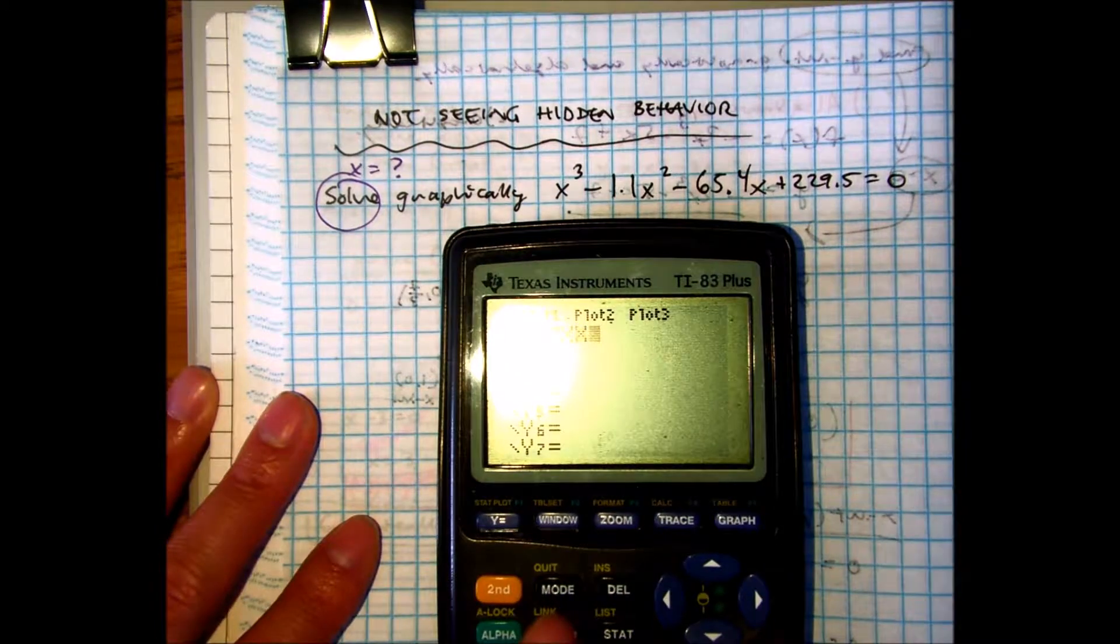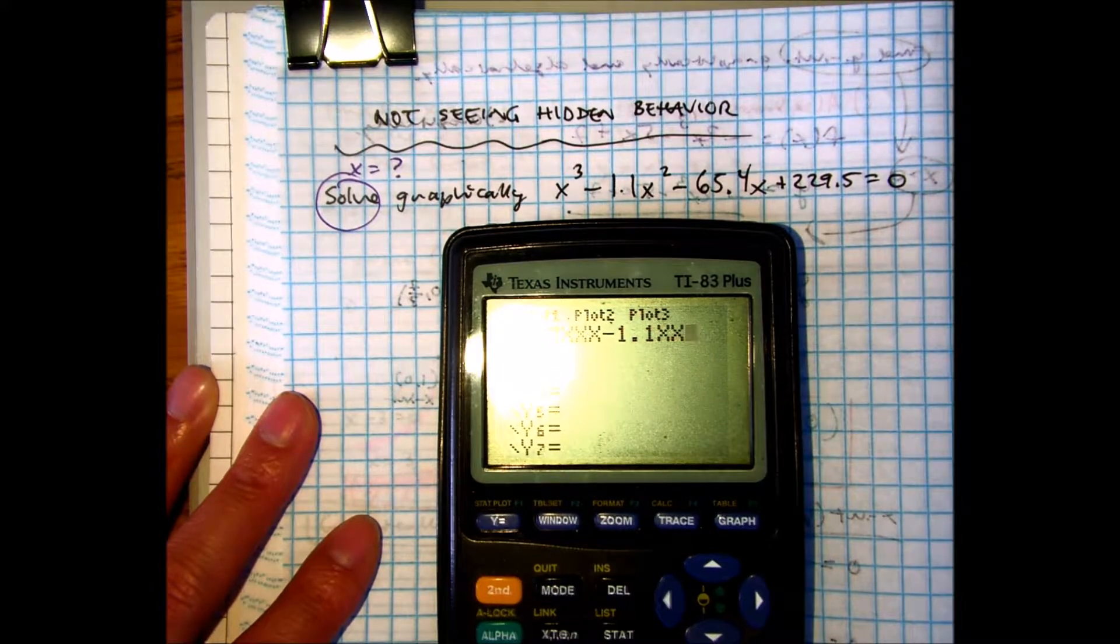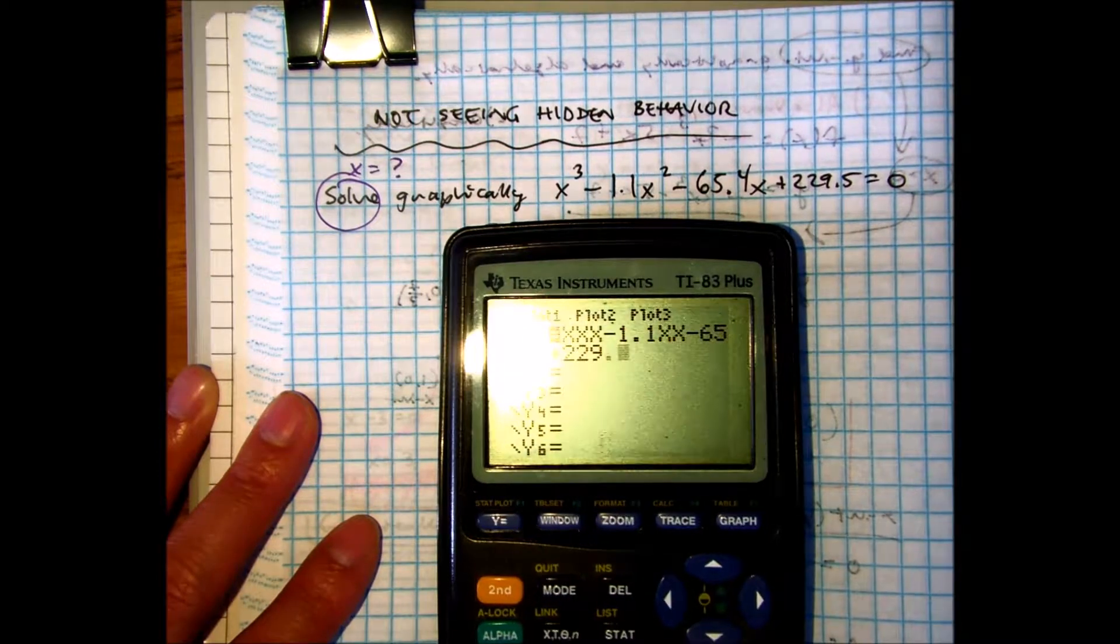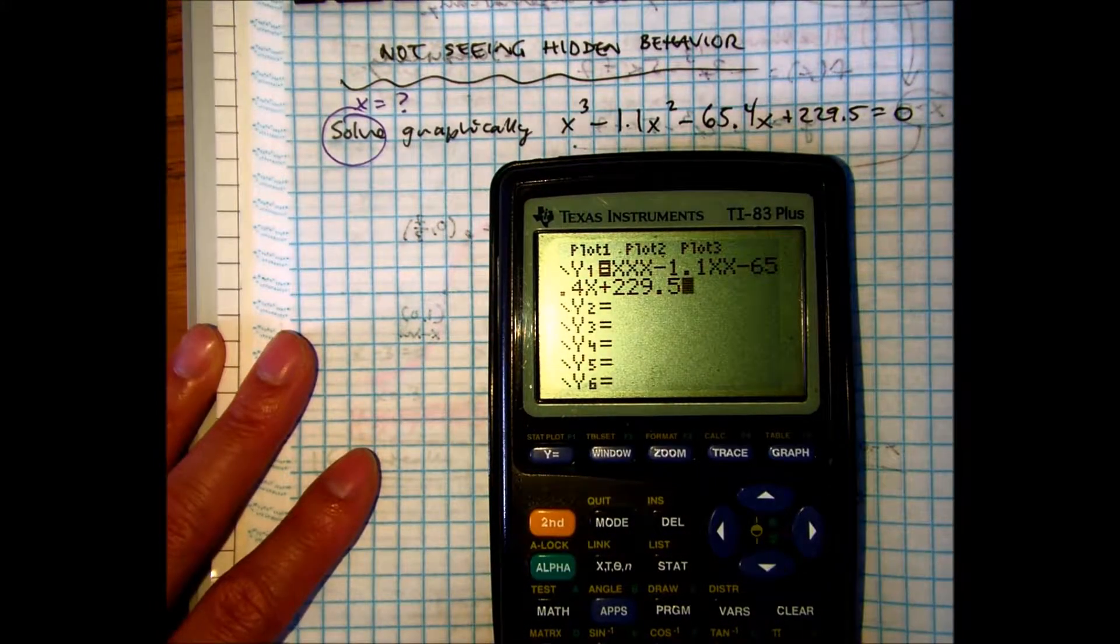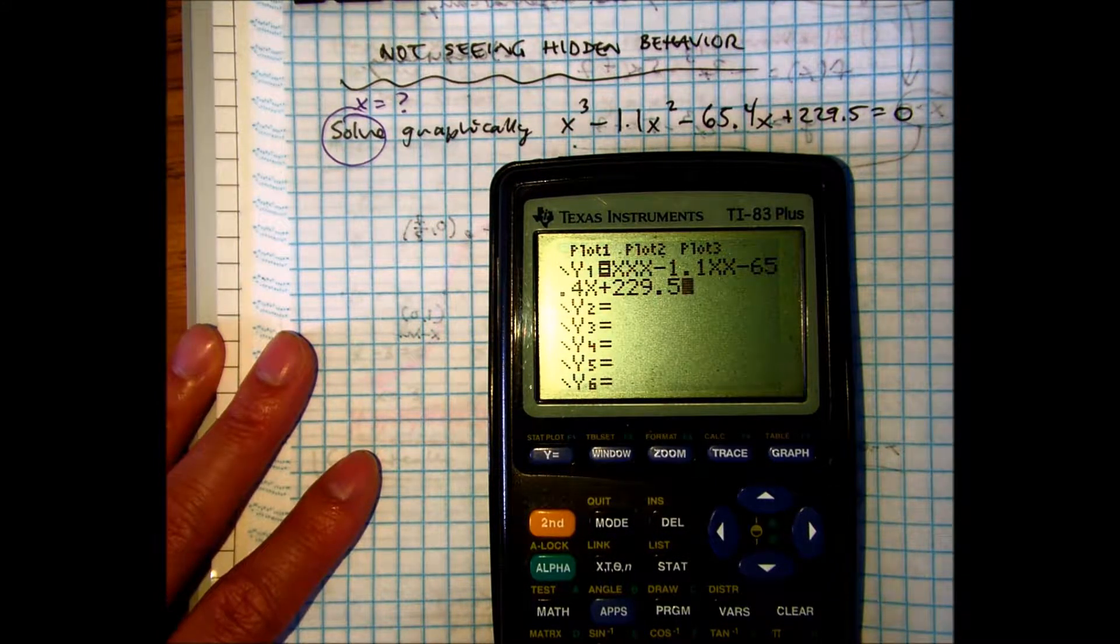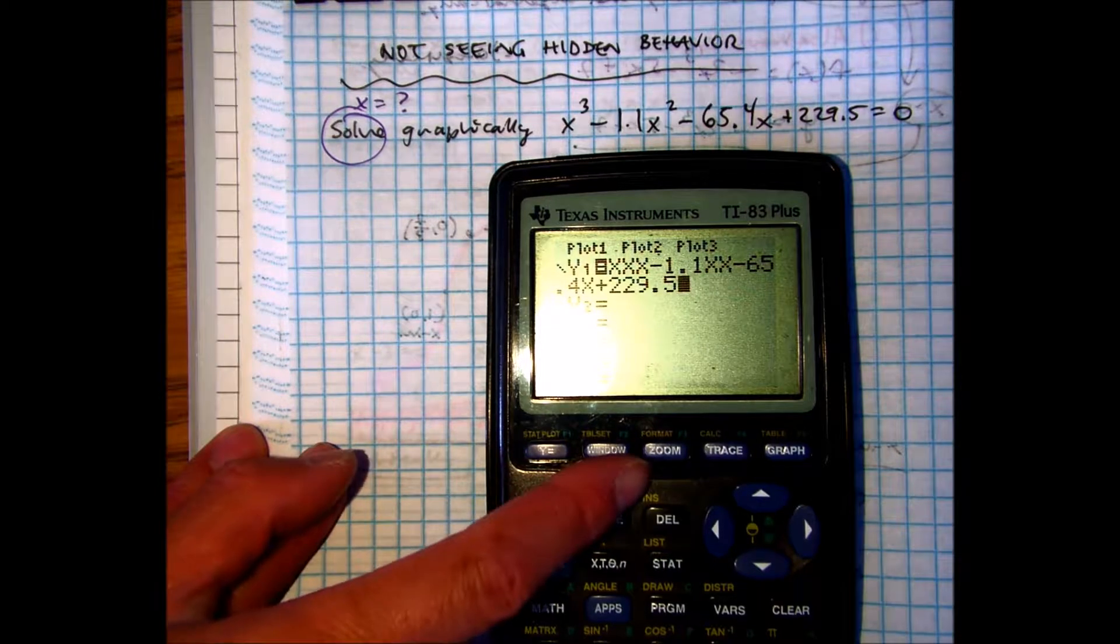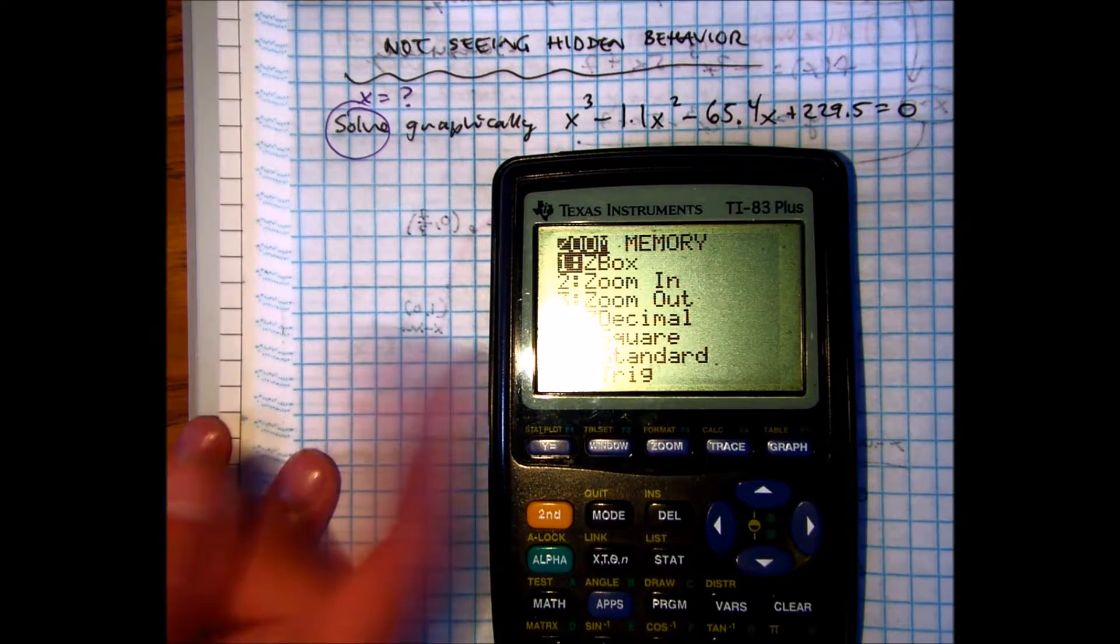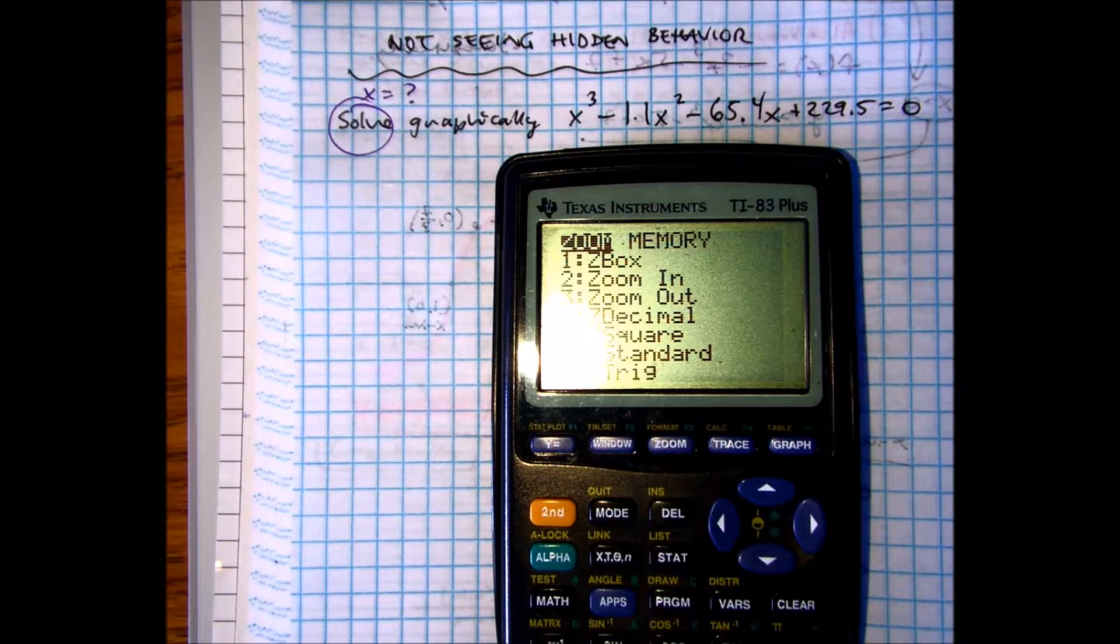x cubed minus 1.1 x squared minus 65.4 x plus 229.5. And then I'm going to press zoom 6. What the zoom does is it resets what I had previously, and when I put it to 6 it's telling me I want negative 10 to 10 and negative 10 to 10.